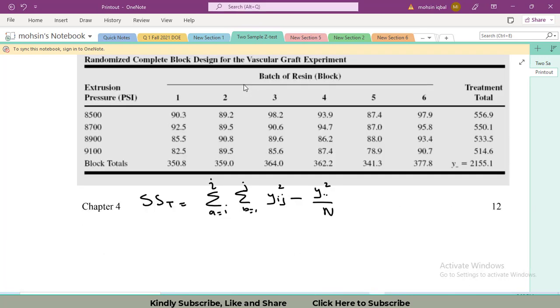First of all, we will talk about sum of squares total. You will have to do like this: 90.3 whole squared. I have told you that yij means all individual values, and then you are taking the square of all those values. Plus 89.2. Just write the first 2 values in your assignment, in your exam. Then insert the plus sign, then always insert 3 dots, then plus sign. This is the standard way when we have too much data. And then the last value 90.7. However, in your calculator or if you are using software like Minitab or SPSS or Design Expert, please insert all those values, then insert the square.